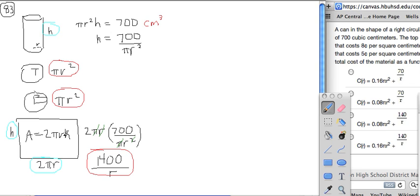We need to get rid of the h. We need to substitute something for that. The reason why we're able to do that is because we're given this relationship right here. We have a fixed volume, and so we can solve for h in terms of r.